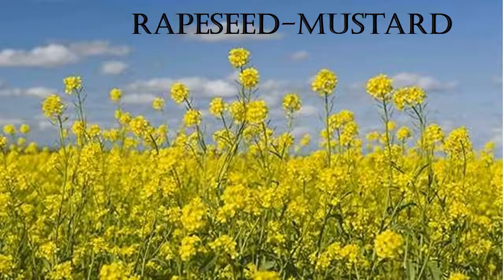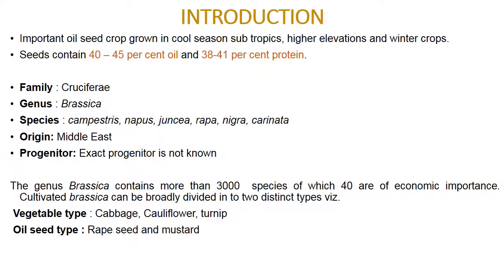Hello dear friends, welcome back to the field crop video series. In this video I am going to talk about rapeseed and mustard biology, breeding and botanical perspectives. Rapeseed and mustard is an important oilseed crop grown in cool season subtropics at higher elevations and as a winter crop. Seeds contain 40 to 45% oil and 38 to 41% protein. It belongs to family Cruciferae, genus Brassica.